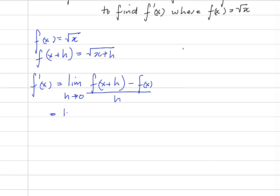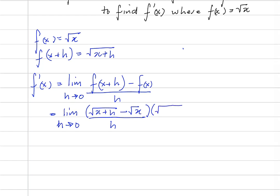This is the same as saying the limit as h approaches 0 of the root of x plus h minus the root of x, all over h. So let's multiply the numerator and the denominator by the conjugate of the numerator. So if I do that, I'm going to have the root of x plus h plus the root of x. At the top, multiplying, we're going to have the difference of two squares.